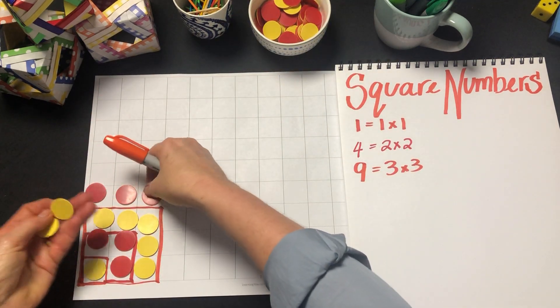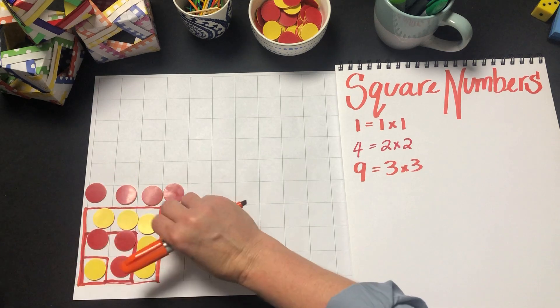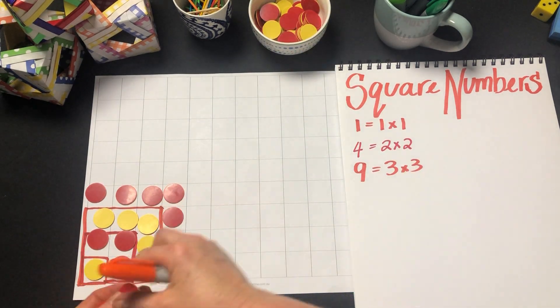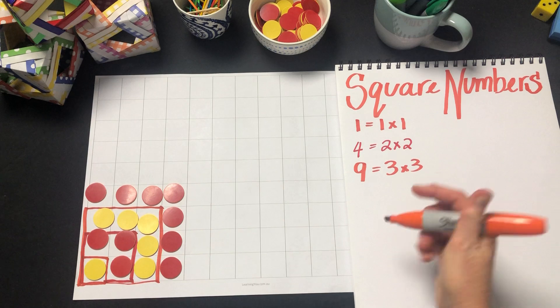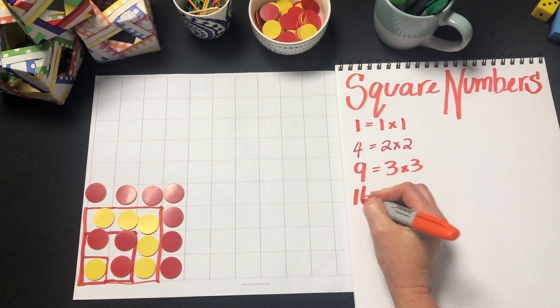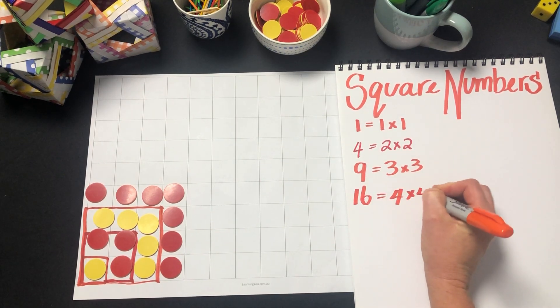So the next one with a side of 4 will be 16 counters all up, and so 16 equals 4 times 4.